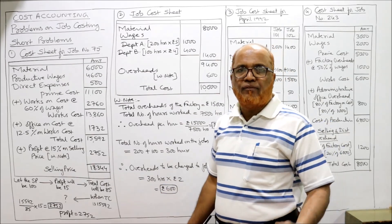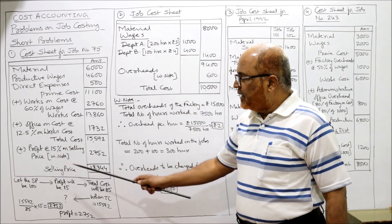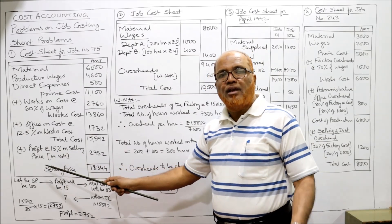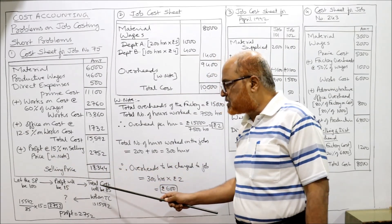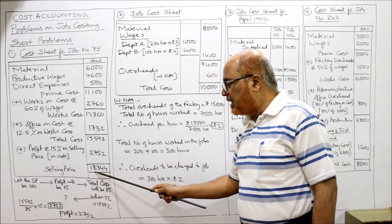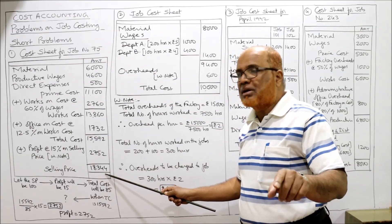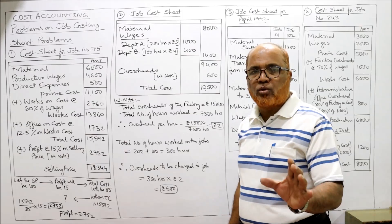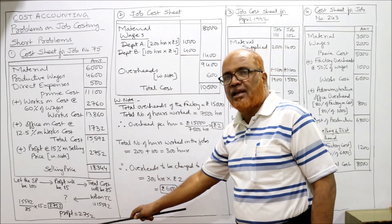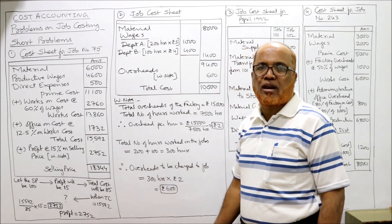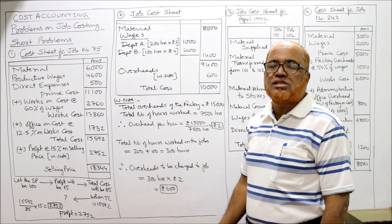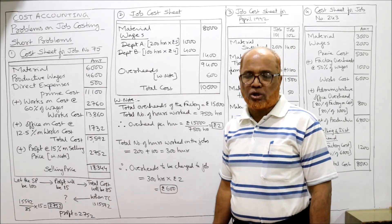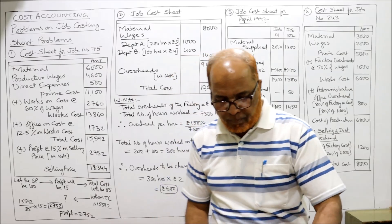Adding 2,752 as profit to total cost gives selling price of 18,344. To confirm: 15% of 18,344 should equal 2,752 — and it does, so our calculations are correct. That's the first problem on job cost sheet. Now see the second short problem.